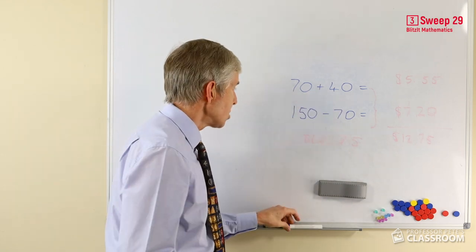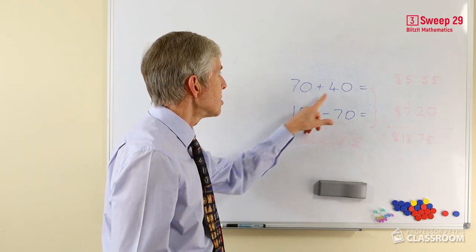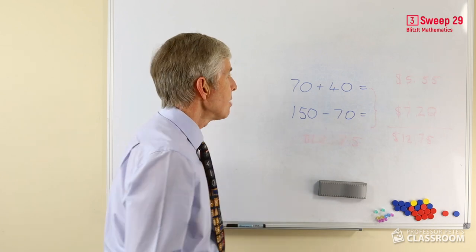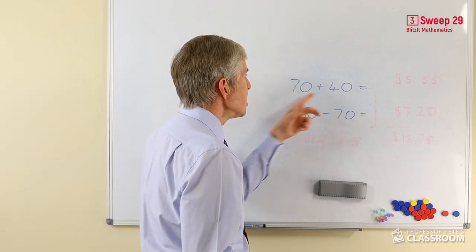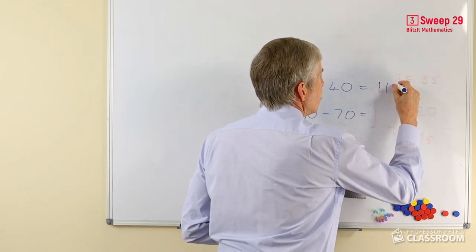70 plus 40. What's that going to be, students? Well, we know 7 plus 4 already. This is a number of tens, this is a number of tens, there's no ones here to complicate things. 7 plus 4 is 11, so 7 tens and 4 tens will be 11 tens, and of course that equals 110.